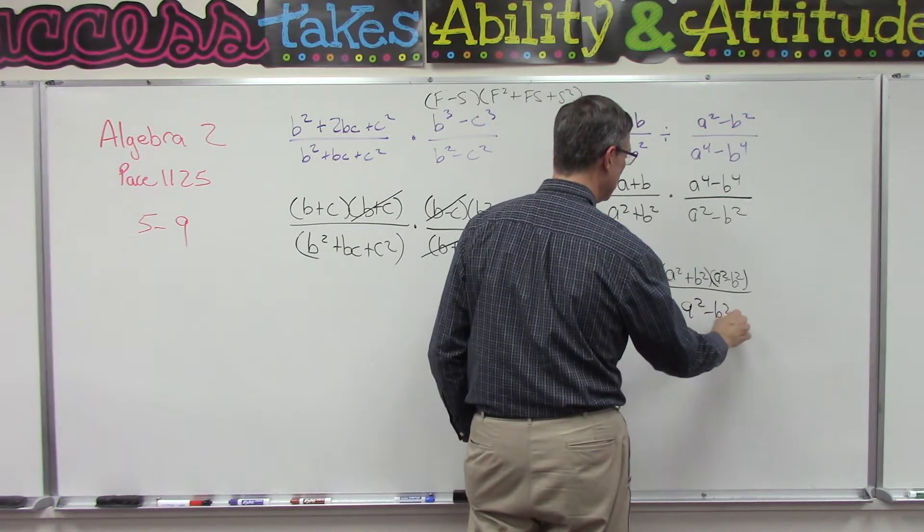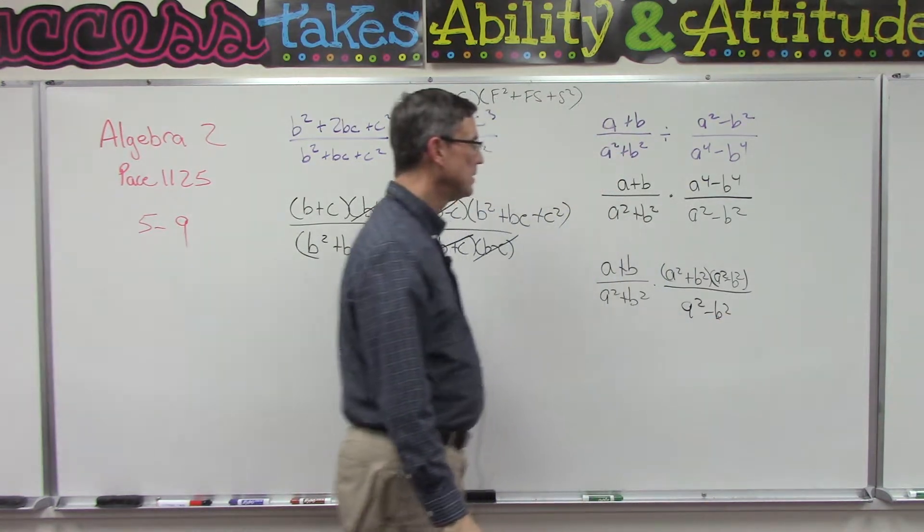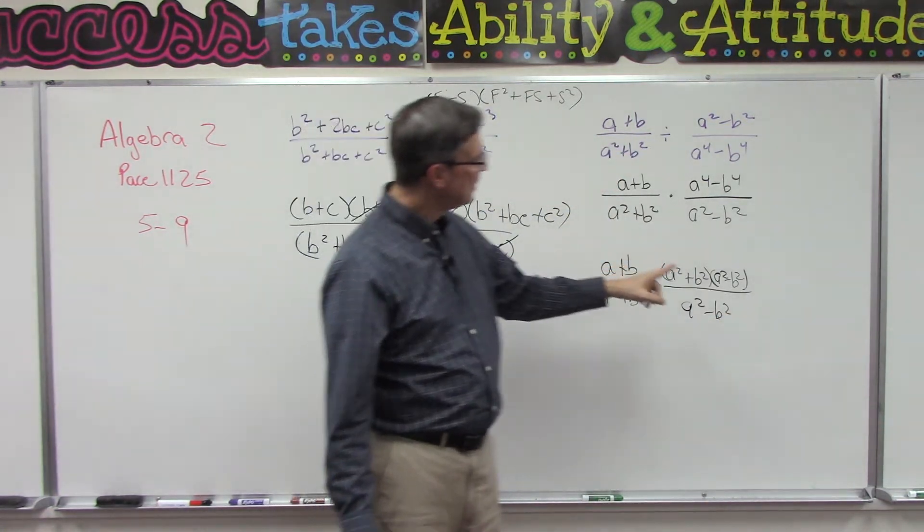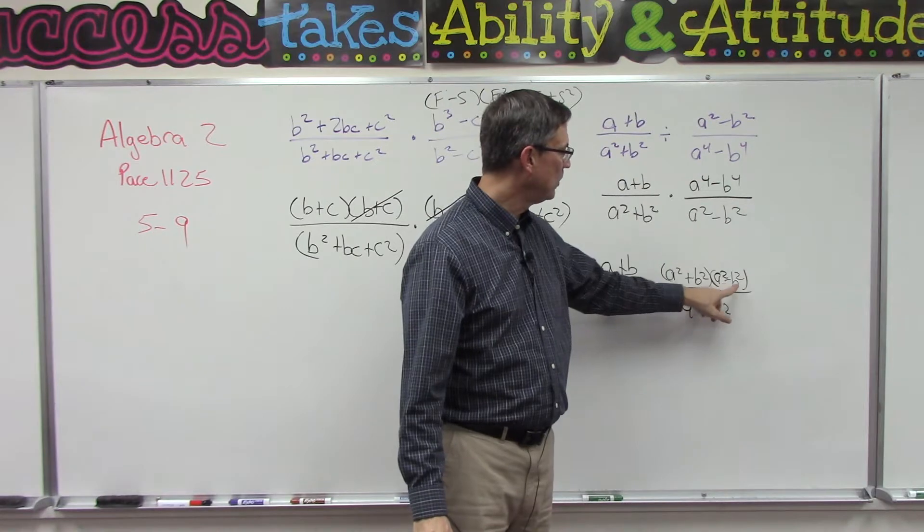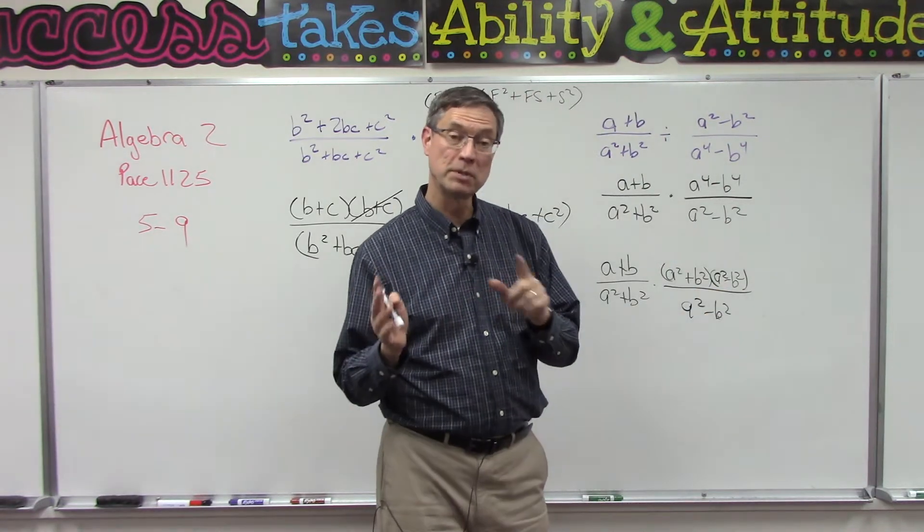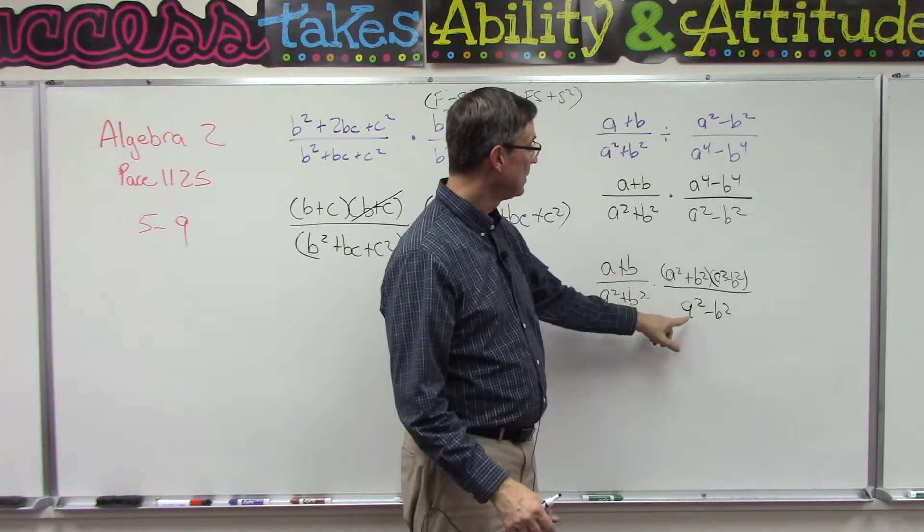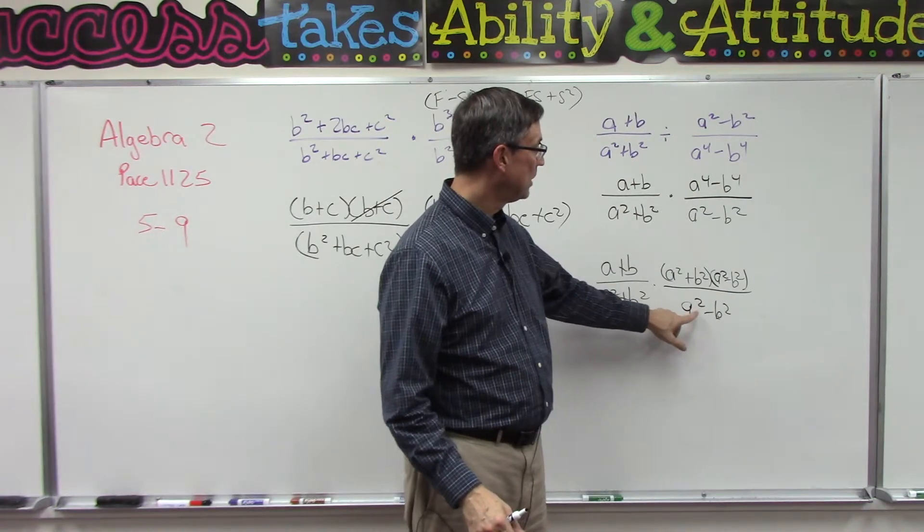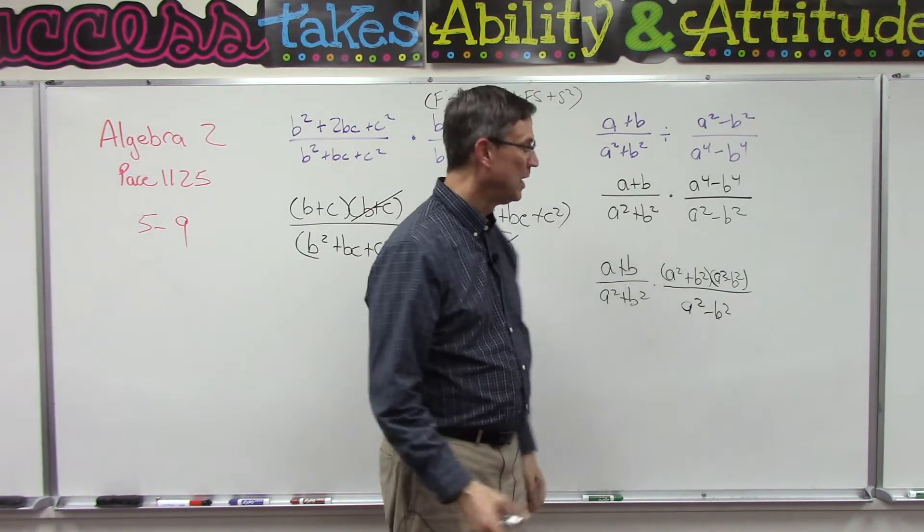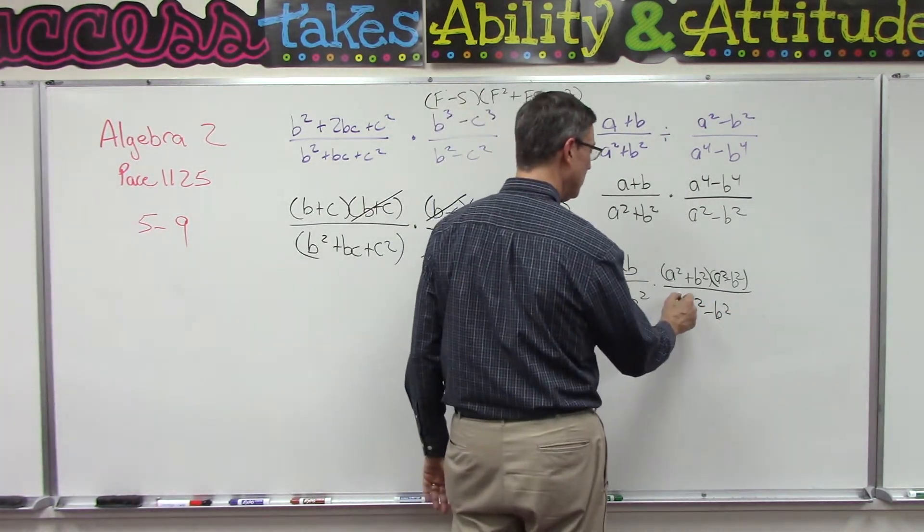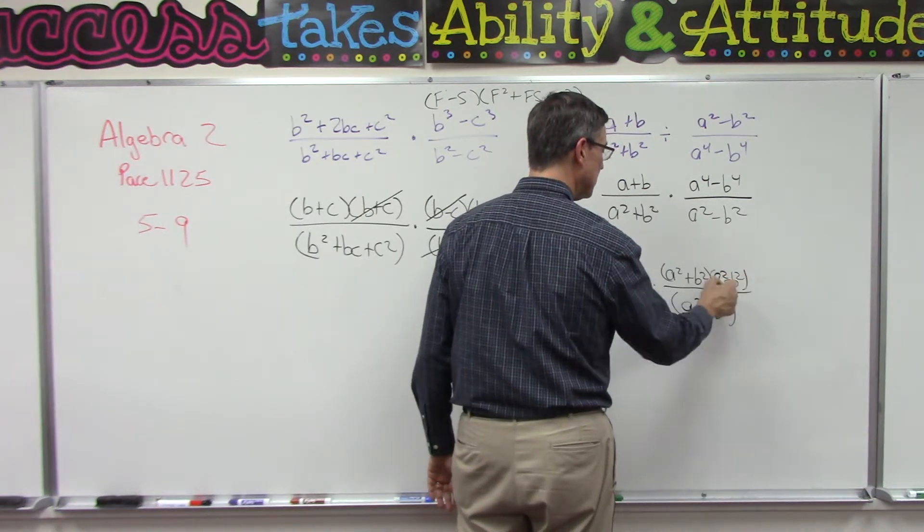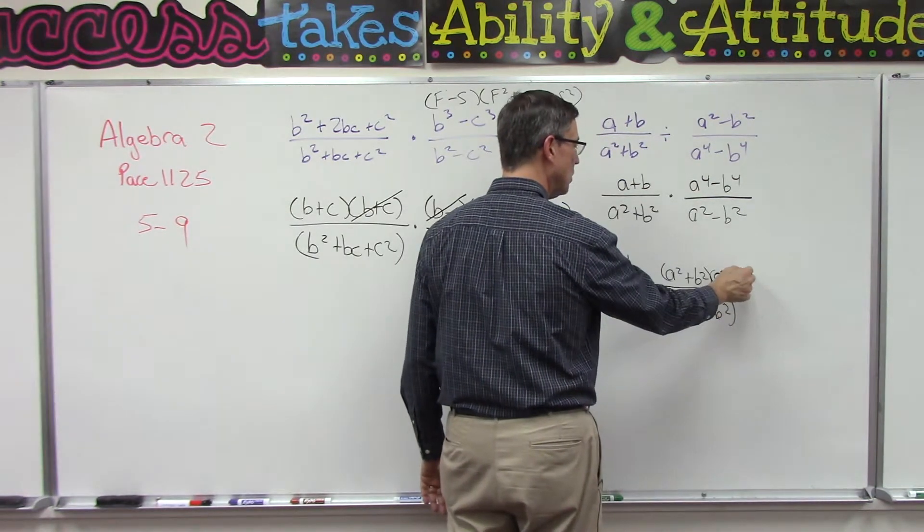And then down here I have a² - b², and sometimes in order to factor it we need to go further with the a² and b². We can turn it into (a + b)(a - b), and then we can do the same down here: (a + b)(a - b). But actually look at this - this is the same as this, so this term in the numerator will cancel this term in our denominator.